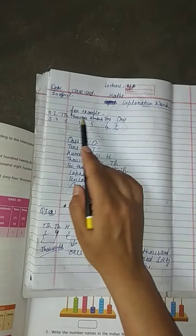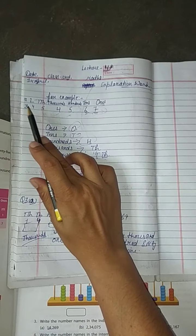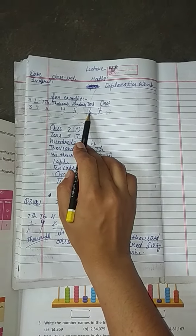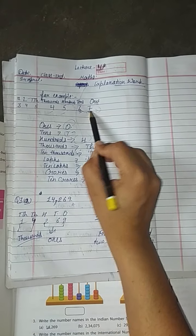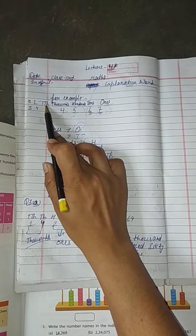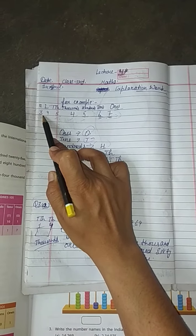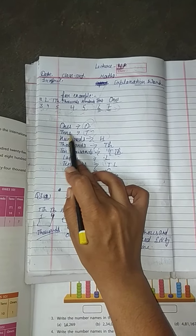Whenever we write a seven digit number, we write it under a method. For example, 7 6 5 4 5 4 3. This is a number of seven digits. Seven ones, six tens, five hundreds, four thousands, five ten thousand, four lakh, three ten lakh.